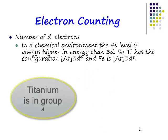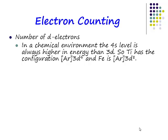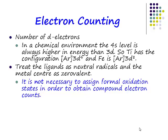So if titanium is in group 4, it donates 4 electrons to our complex. Iron is in group 8, it donates 8 electrons to our complex.